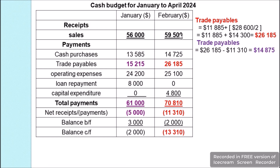For February's revised budget, receipts are cash sales of $59,500. Payments include cash purchases of $14,725. Trade payables consist of $11,885 deferred from January plus half of January's purchases paid on credit: $28,600 ÷ 2 = $14,300, totalling $26,185. Operating expenses are $25,100 and capital expenditure is $4,800, giving total payments of $70,810.